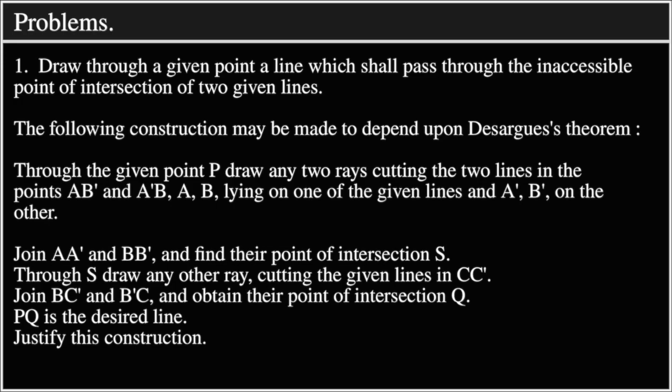Problem 1: Draw through a given point a line which shall pass through the inaccessible point of intersection of two given lines. The following construction may be made to depend upon Desargues's theorem. Through the given point P draw any two rays cutting the two lines in the points AB' and A'B.